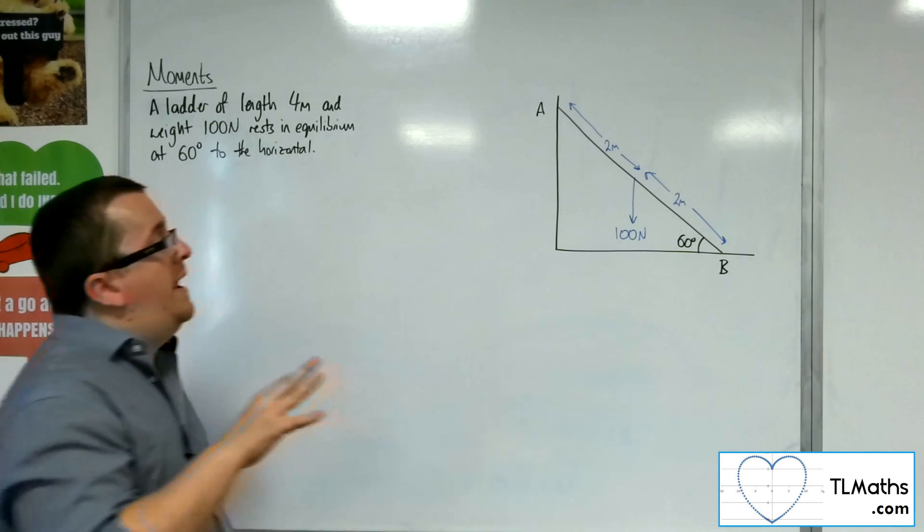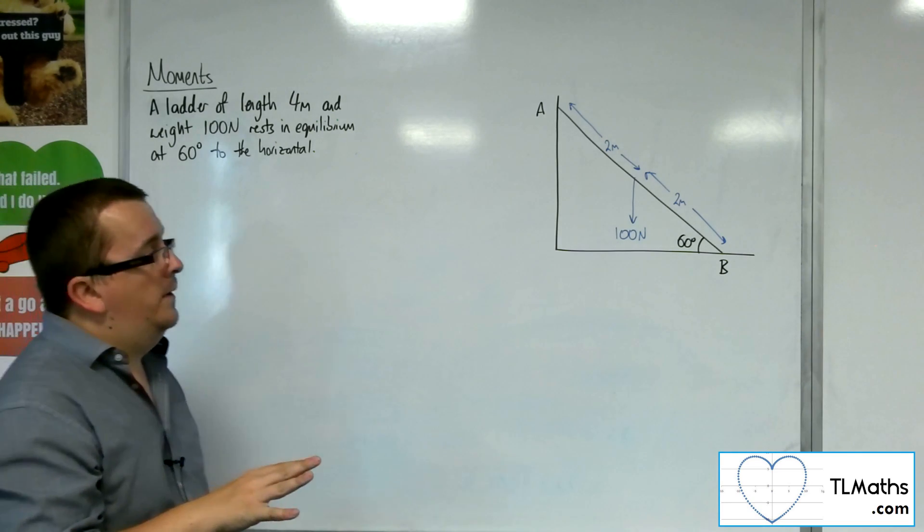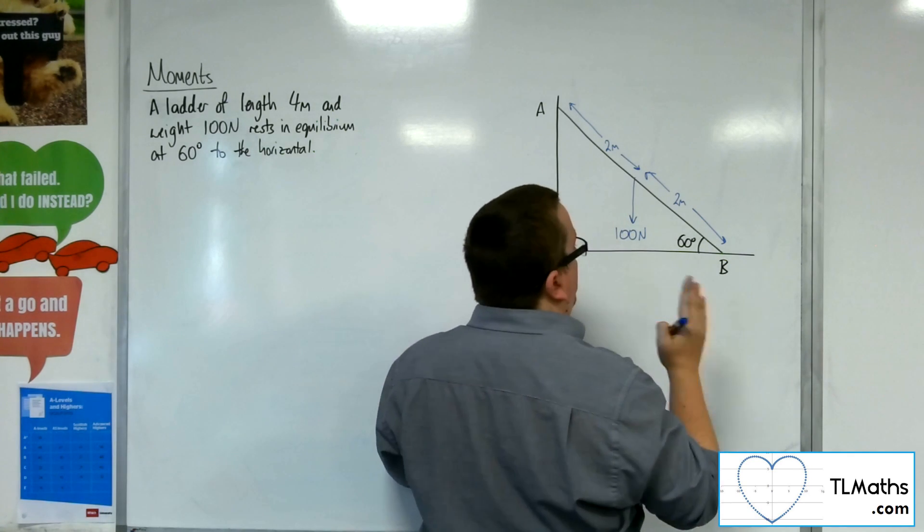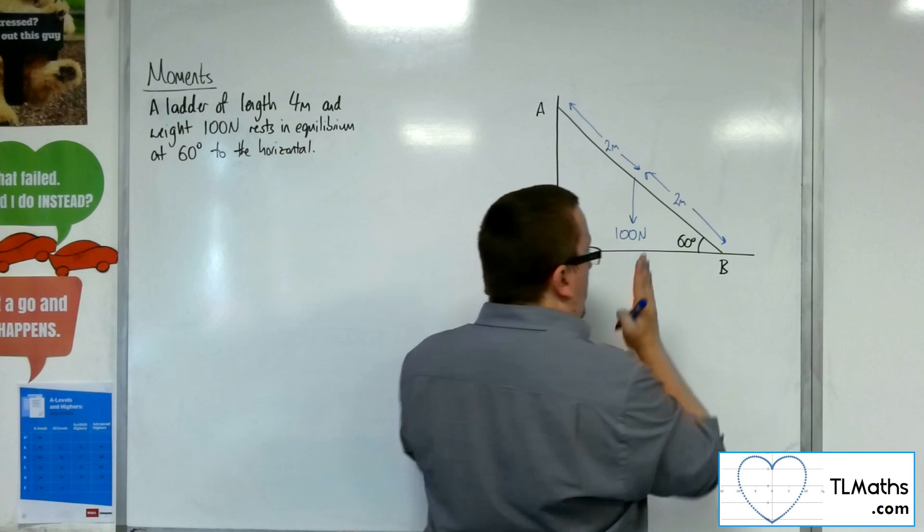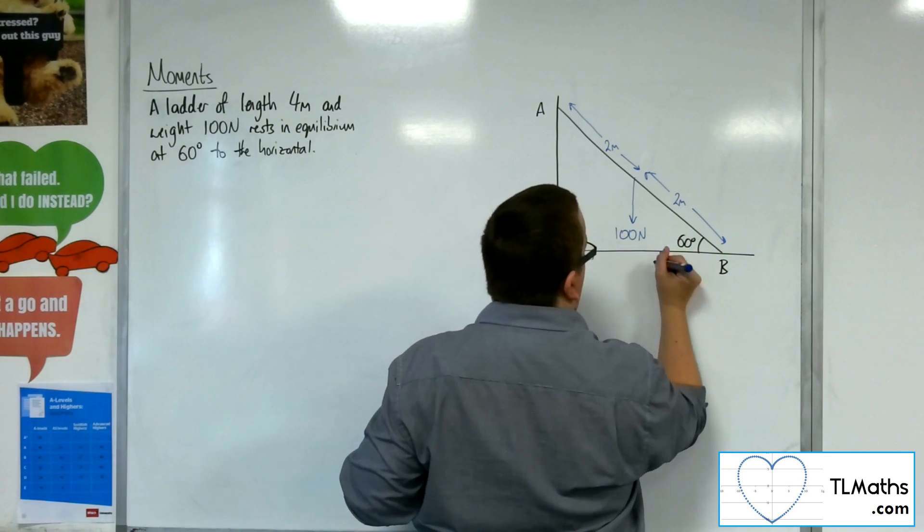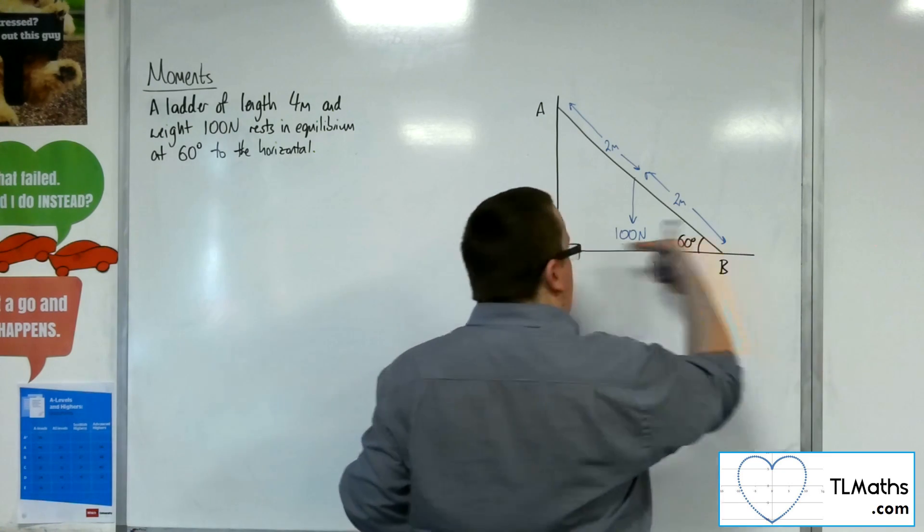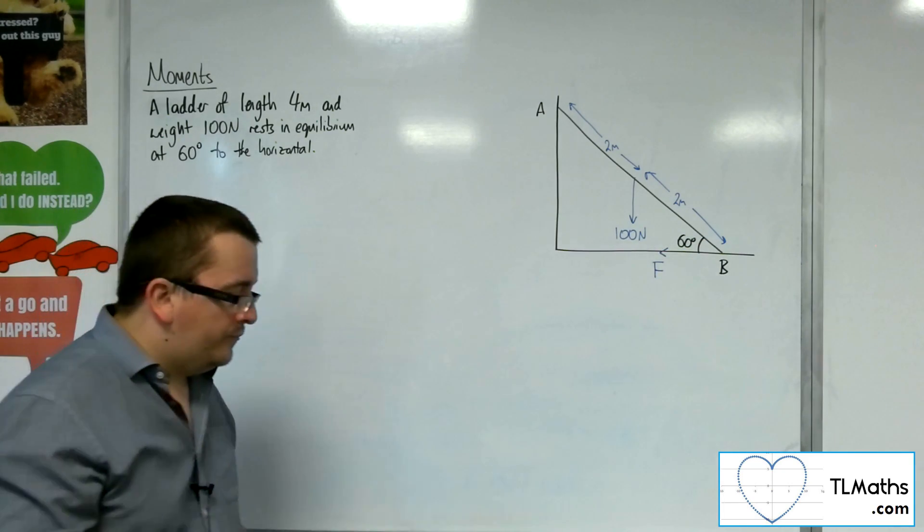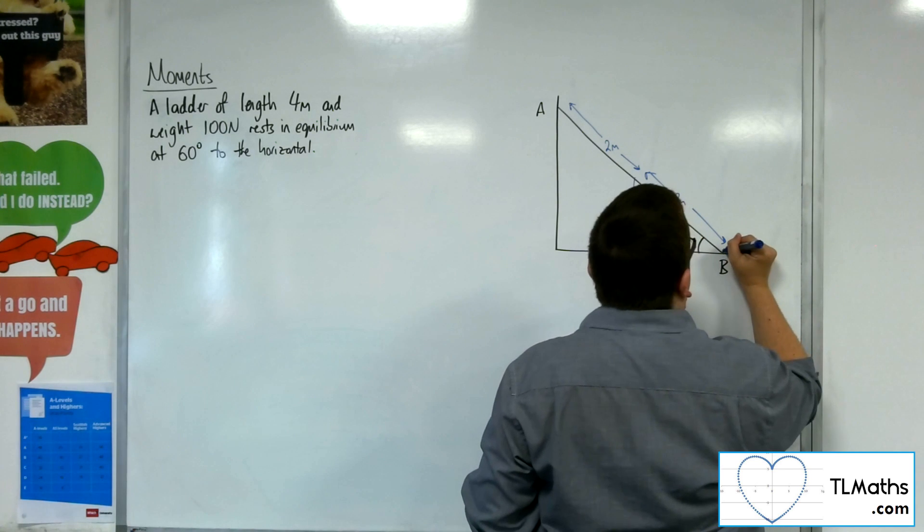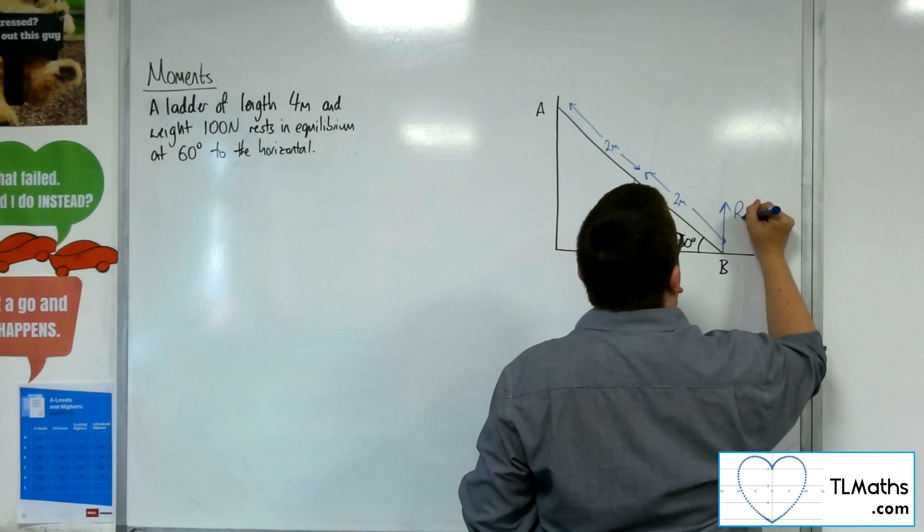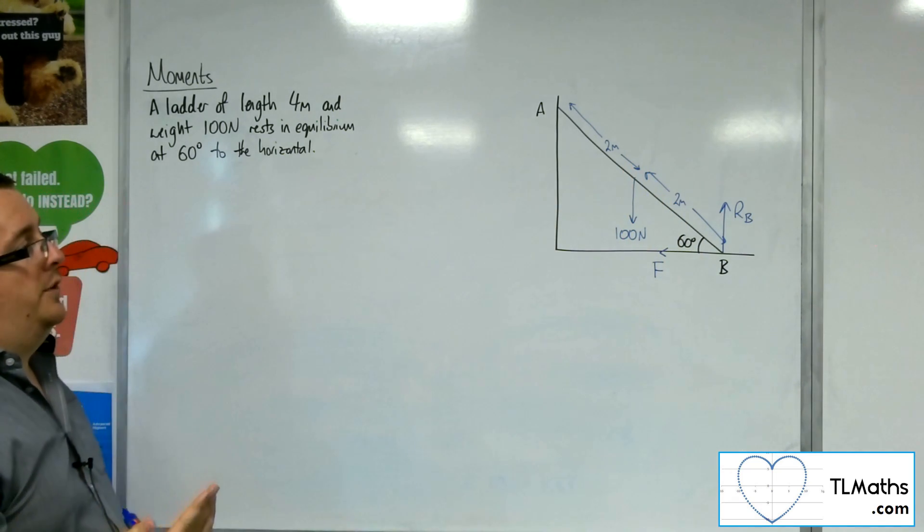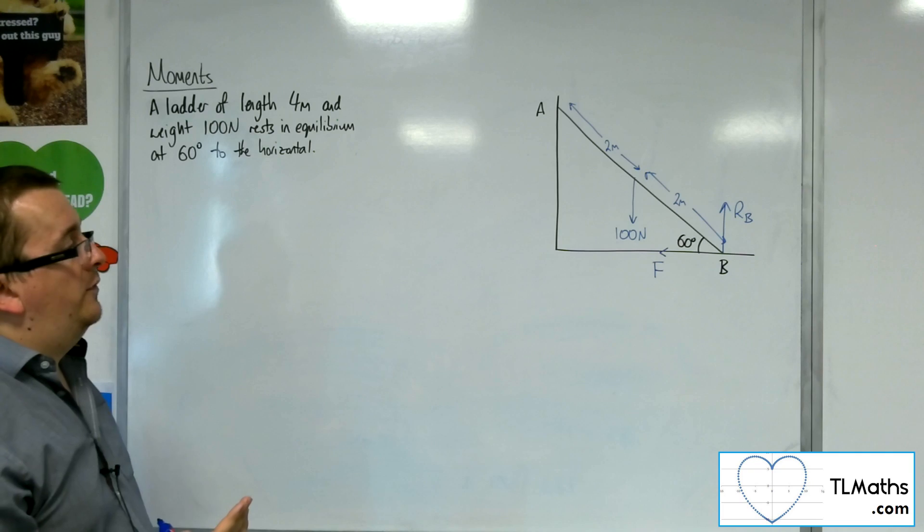So what then happens? If the floor is rough, then that means that there's going to be some frictional force stopping the ladder from moving towards the right. So the frictional force will work in that direction there. There will be a normal reaction, RB, that's vertically upwards at the floor, at the base of the ladder.